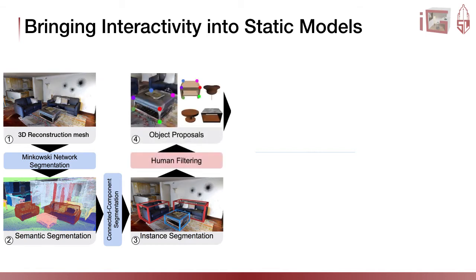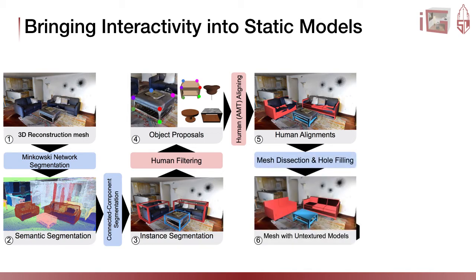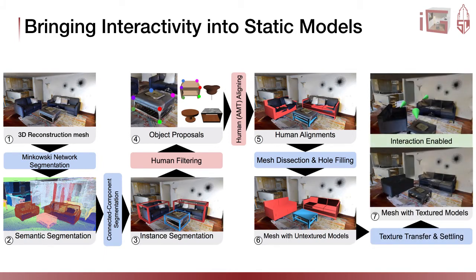In the first round of annotation, we consider objects from the classes of chair, table, desk, couch, and door. After human filtering, a subset of the object proposals are submitted to Amazon Mechanical Turk for humans to annotate point correspondences between CAD models and the original mesh to estimate pose alignments. Then we align the CAD model to the mesh, segment out the pieces of original mesh that correspond to the CAD model, and fill holes on the floors and walls left by the previous operation. To make CAD models blend in visually with the original scene, we transfer the texture from the original mesh to the CAD models based on vertex distance.